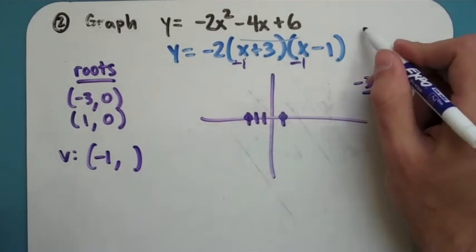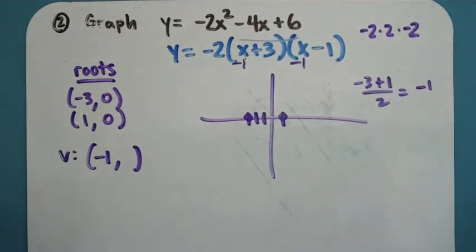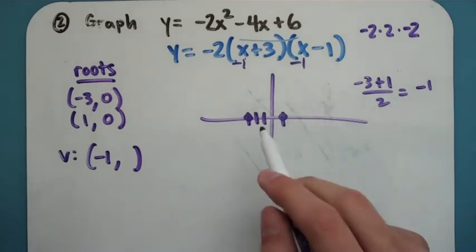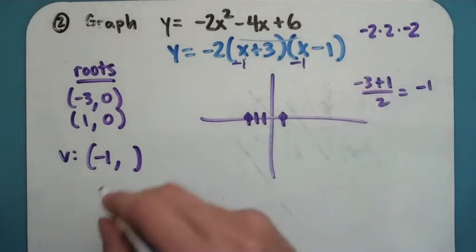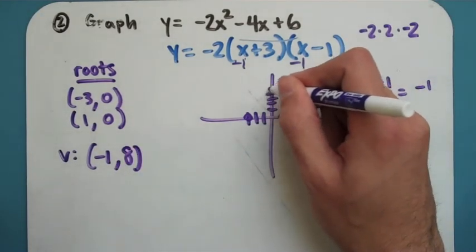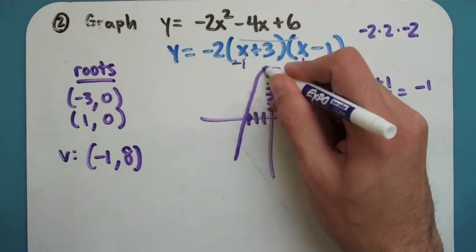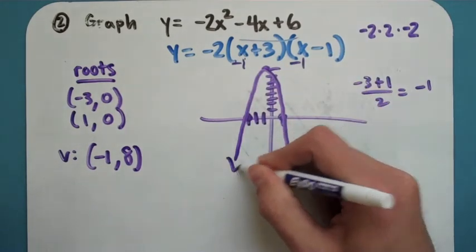So I'm going to get negative 2 times 2 times negative 2. Looks like I will get out a negative, no a positive, I'm sorry, positive 8. So I'm going to go to negative 1 comma positive 8. I'm going to plot my points, and then I can graph my parabola based on the 3 points that I have there.